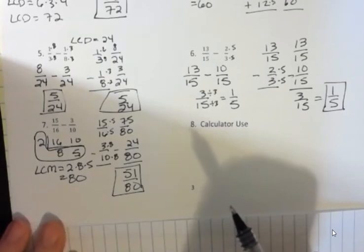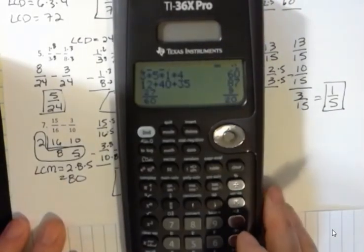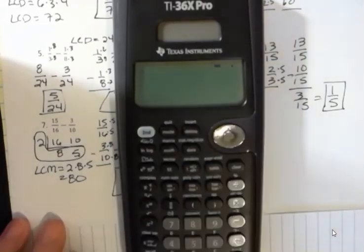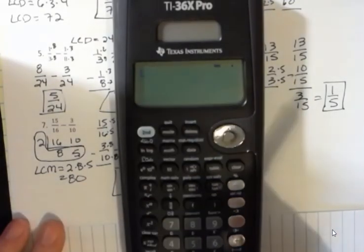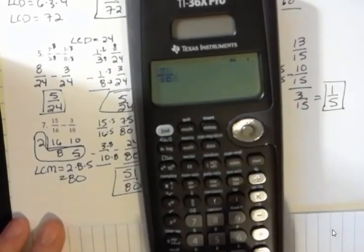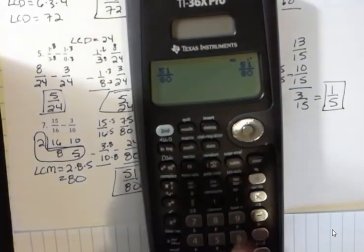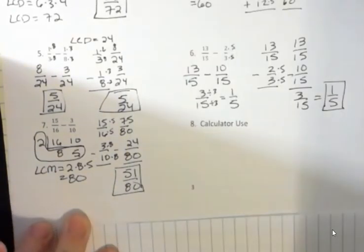Well, can I reduce it? I don't think so. You might have a different calculator, but you can always go on YouTube and Google your calculator name and say reduce a fraction, and somebody will have shown you how to do that. So let's say I have 51 over 80, and I want to know, does that reduce? See, when I hit enter, it still says 51 over 80. So I can't reduce that.